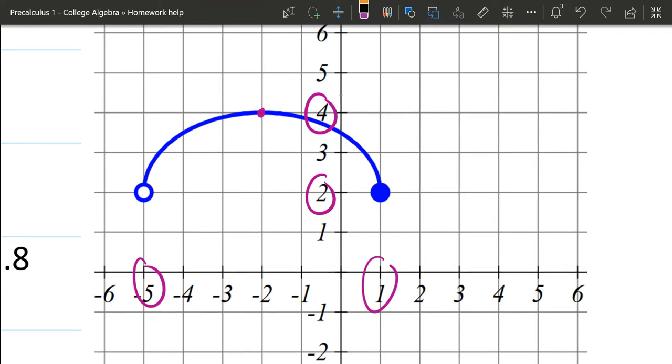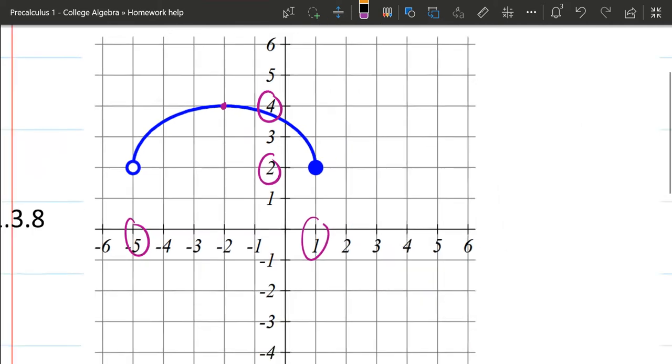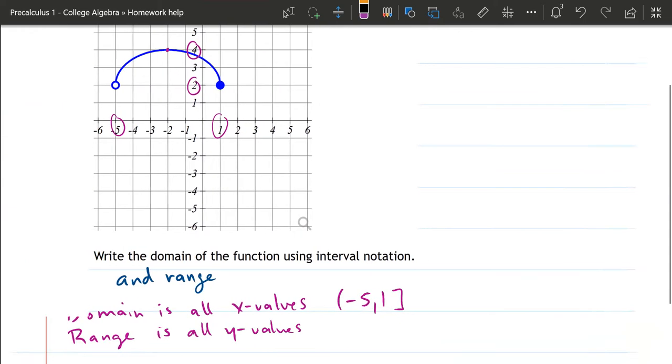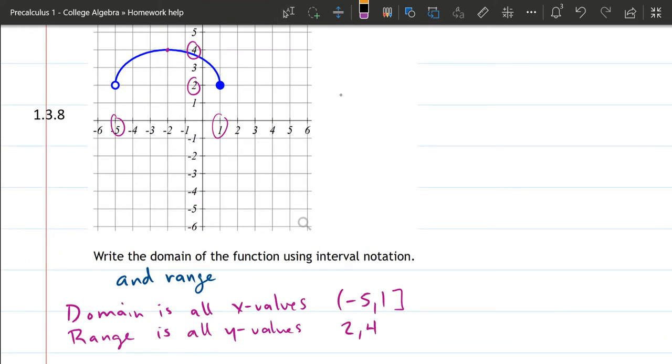There's a point on the graph right here that actually has the y value of 4. So we're definitely including 4. So let's go ahead and write 2 comma 4. So we're including 4, square bracket.